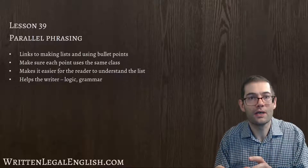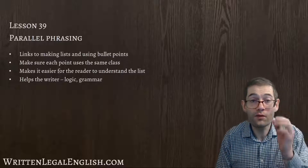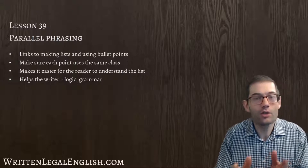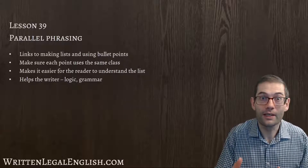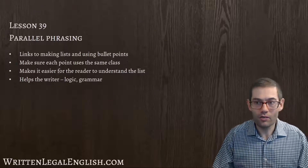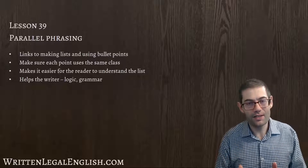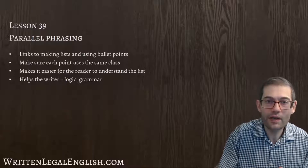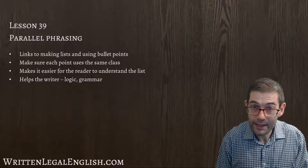If you don't do this — if you present a list which has got lots of different classes for all the different points — you potentially could be creating an illogical list, or at least causing the reader to try and work out what's going on. And as we know from previous videos, if you are making the reader try to interpret what you are writing because it's not clear, this is not a successful piece of writing. By using parallel phrasing and ensuring the class is the same, you are making it easier for the reader to understand the list.